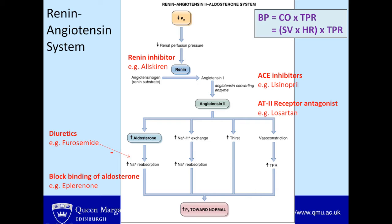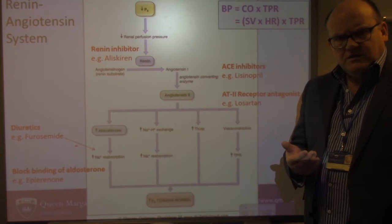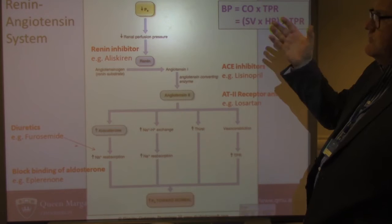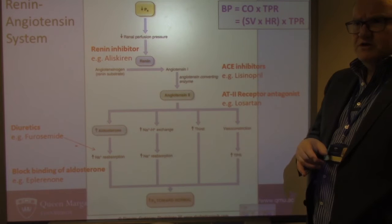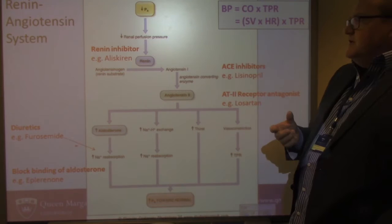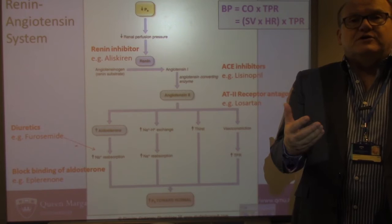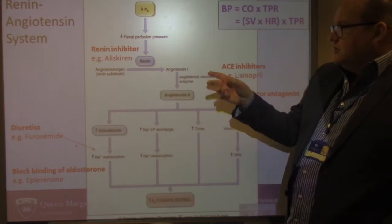Here we have a flow diagram — I'd recommend printing it off as a single PowerPoint slide and looking at it in detail. What we're looking at is one of the natural systems in our body that monitors falls in blood pressure and brings it back up. This is known as the renin-angiotensin-aldosterone system, or the RAAS. Starting at the top: our arterial pressure has fallen, meaning perfusion pressure around the body has dropped. Renal perfusion pressure drops as one example, activating the enzyme renin, which converts angiotensinogen to angiotensin-1.